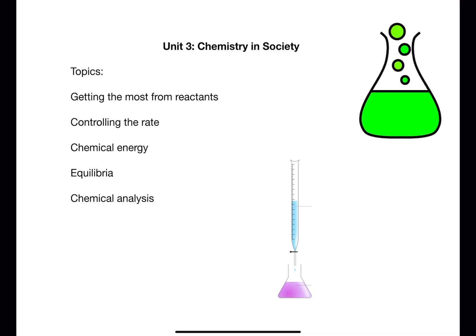Unit 3 is called chemistry and society. This unit looks at industrial chemical processes. There is a focus on chemical calculations and their application to processes. These calculations are based on those from National 5 and extend them further into molar volume, excess, percentage yield and atom economy.